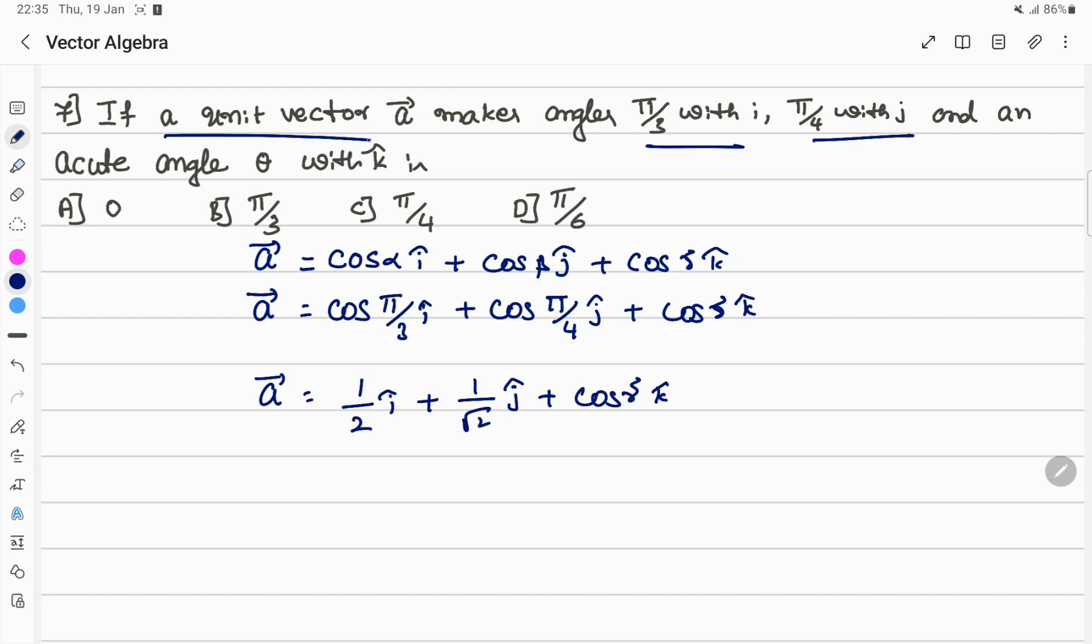cos 60 degrees is 1 by 2, cos 45 degrees is 1 by root 2. So this is 1 by 2 i plus 1 by root 2 j plus cos gamma k. This is the vector. Now A is a unit vector.